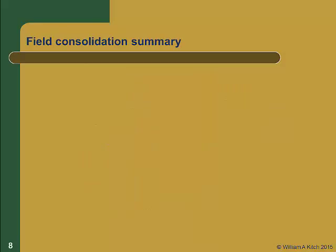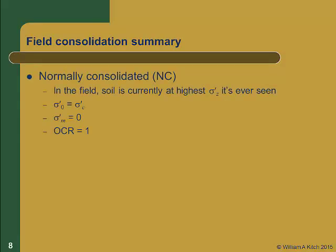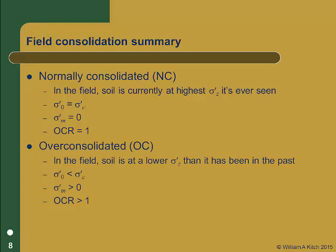Let's quickly summarize the field conditions that are possible. If the soil is normally consolidated (NC), it is currently at the highest vertical effective stress it has ever seen: sigma prime zero equals sigma prime c, the consolidation margin is zero, and the over consolidation ratio is 1. Alternatively, if the soil is over consolidated (OC), sigma prime zero is less than sigma prime c, the over consolidation margin is greater than zero, and the over consolidation ratio is greater than 1.